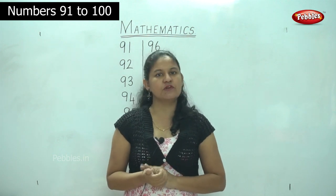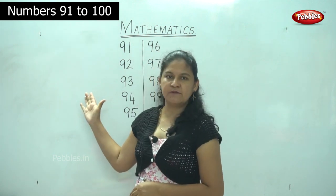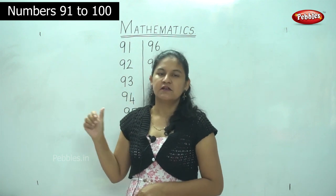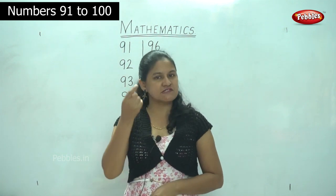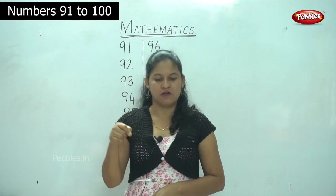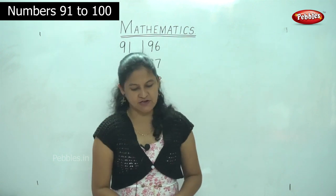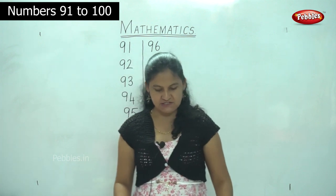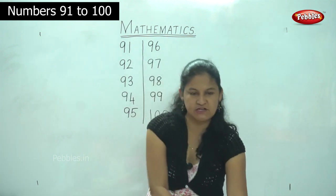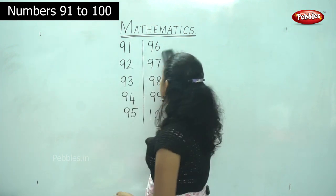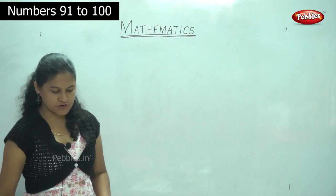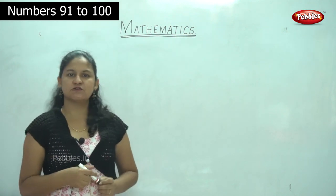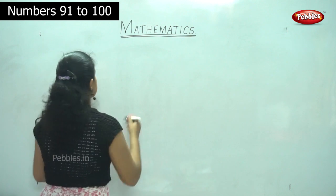Next we will move on to number names for numbers 91 to 100. I would like you to say the spelling as you write. So are you ready, children? Shall we start writing the number names for numbers 91 to 100? We have already learned the spelling for 90, so it will be easy for us.